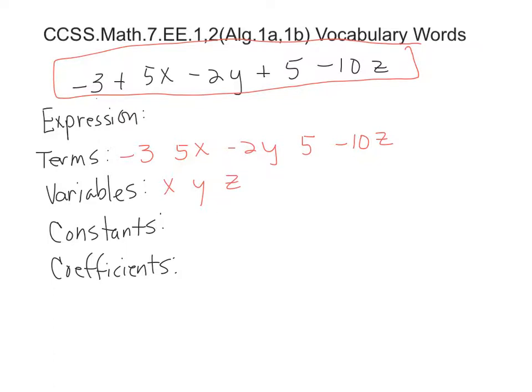Now constants are numbers that stand alone. So the numbers that stand alone are negative 3, not 5 because that's with a coefficient. That's with x, not negative 2 because that's with y, but positive 5 here, so we won't write the positive. All right, so those are constants. Those are numbers that stand alone.